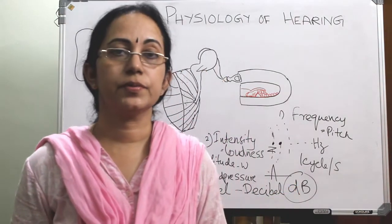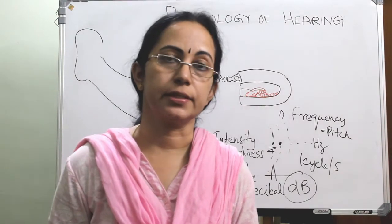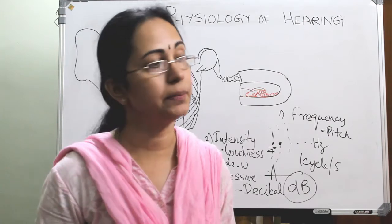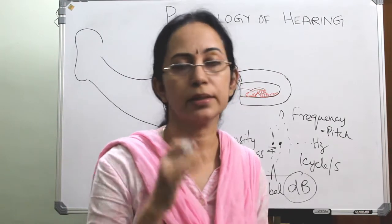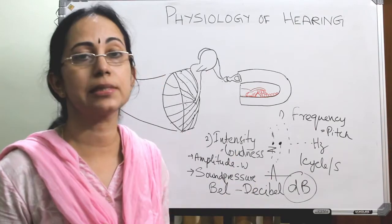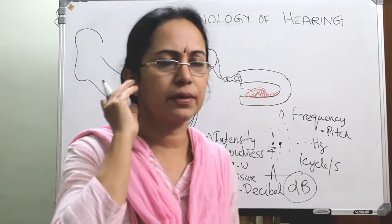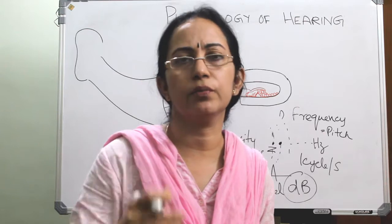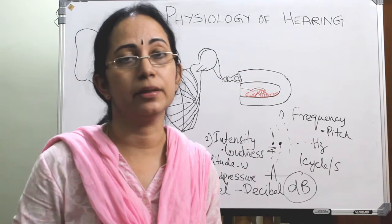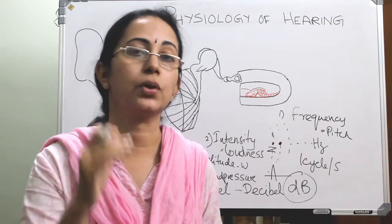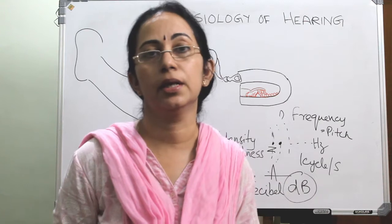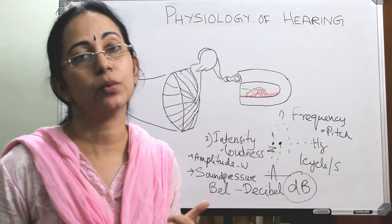Different types of speech have different intensities. Whispering has around 30 dB of intensity or loudness. Normal conversation is around 60 dB. When intensity exceeds around 140 dB, loud sounds will cause pain in the ear, so there is a maximum tolerable limit.